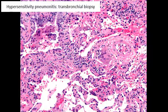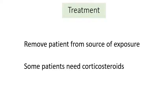Here's another picture of hypersensitivity pneumonitis in a transbronchial biopsy, again showing lymphocytes within the interstitium and a multinucleated giant cell.